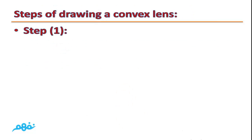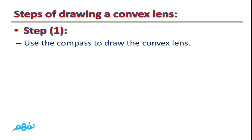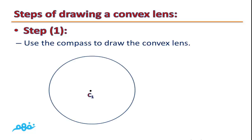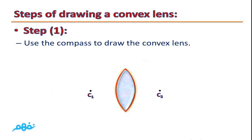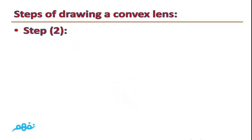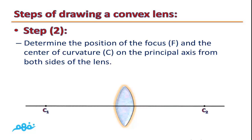Steps of drawing a convex lens. Step 1: Use a compass to draw the convex lens. Draw a line segment of length 11 cm. Use its starting point as the center with a compass radius of 6 cm and draw the first arc. Use the ending point as another center and draw a second arc. The two arcs intersect; remove the extra parts to complete the convex lens shape. Step 2: Determine the position of the focus, which is at the midpoint between the optical center and the center of curvature on the principal axis, on both sides of the lens.